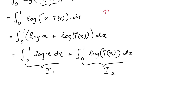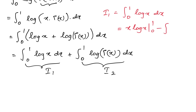We take the first integral as I1 and the second as I2. To evaluate I1 = ∫₀¹ ln(x) dx, we use integration by parts. This gives x·ln(x) evaluated from 0 to 1, minus the integral from 0 to 1 of x · (1/x) dx. The x's cancel, the boundary terms are 0, and we get I1 = -1.